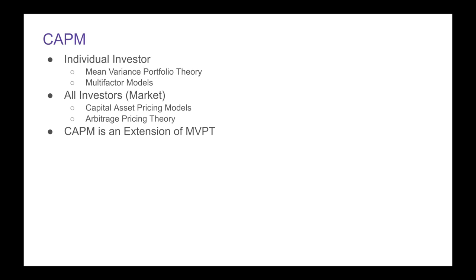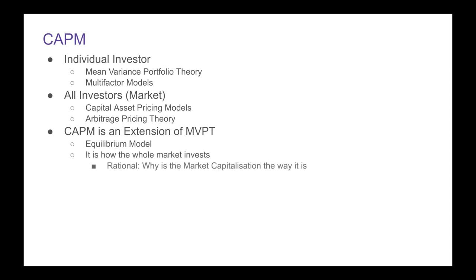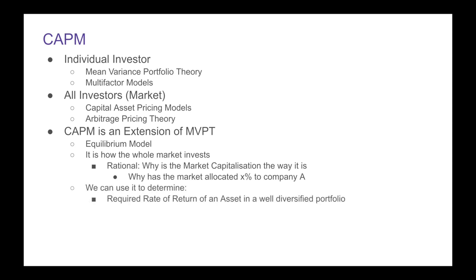The big idea here is that CAPM is an extension of mean variance portfolio theory. Mean variance portfolio theory is how to design your portfolio looking just at mean and variance — mean you want to maximize, variance you want to minimize. Whereas capital asset pricing models, we're going to see that this is more of an equilibrium model. It tells us how the whole market invests. It's the rationale for why the market capitalization is the way it is — why does the market allocate X percent to company A? We can use this model to determine the required rate of return of an asset in a well-diversified portfolio.